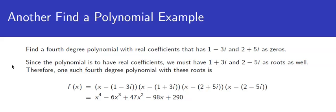The key words here are real coefficients. Since it has to have real coefficients, we know that if we have one complex root, its conjugate also has to be a root, or if we have one complex zero, its conjugate also has to be a zero.